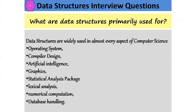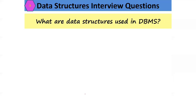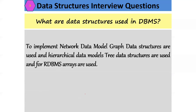What are data structures primarily used for? Data structures are widely used in almost every aspect of computer science — in operating systems, compiler design, artificial intelligence, graphics, statistical analysis, lexical analysis, numerical computation, and database handling. In operating systems, data structures are used for scheduling algorithms. In compiler design, data structures are used to maintain the symbol table. In database handling, data structures are used to model the data.